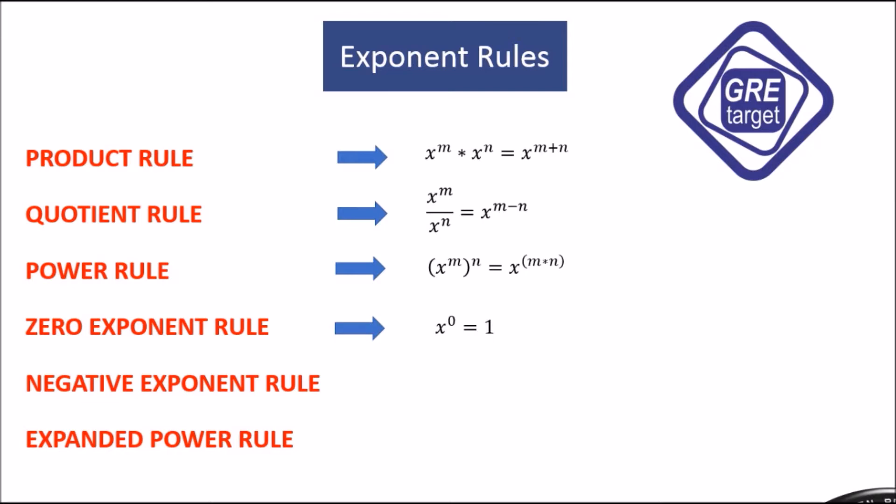The zero exponential rule: x raised to zero equals one. For example, 1 raised to 0 equals 1, 75 raised to 0 equals 1, 85 raised to 0 equals 1. Any number raised to zero equals one. Next is the negative exponential rule: x raised to minus m equals 1 divided by x raised to m, making the exponent positive.